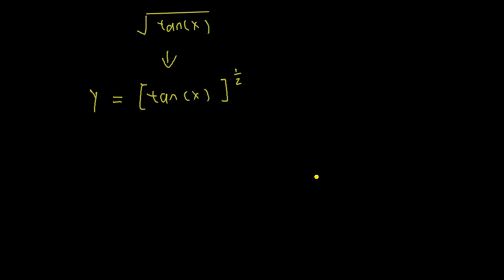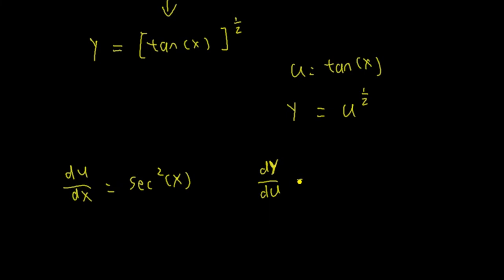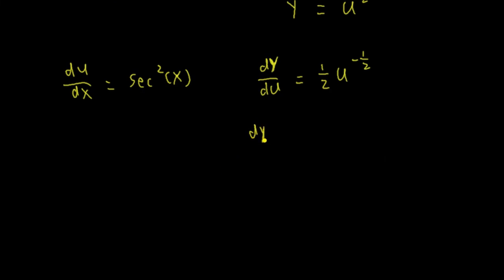To use the chain rule, let y equal to this function. Let u equal to tangent of x. Since u is tangent of x, then y must be u to the power of 1 half. According to the chain rule, take the derivative of u with respect to x first: du/dx equals secant squared x. Next take the derivative of y with respect to u, which equals 1 half u to the power of negative 1 half.